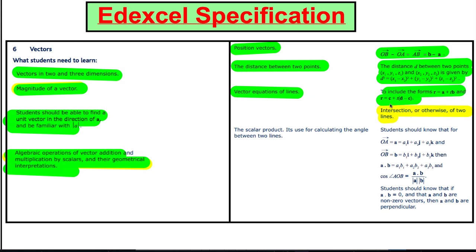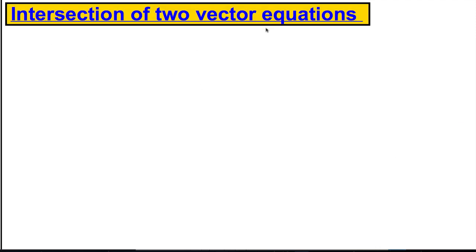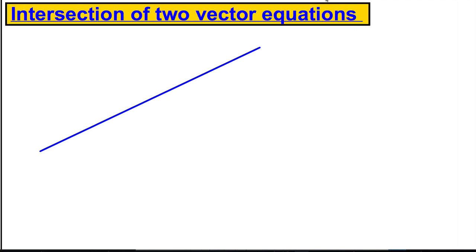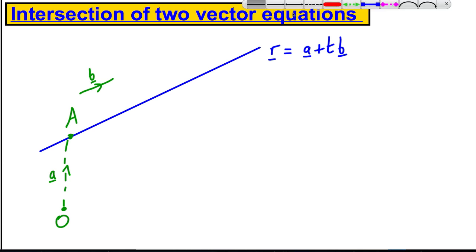Just before we get into it, here's the big idea. Suppose you had a vector equation of a line, this one here in blue. Say this was of the form R equals a plus T B. Remember what that means: there's the origin, you know a point A on the line, and you know this vector to get there is a, and you know the direction of the line is B. So you know any point on the line is given by that formula.